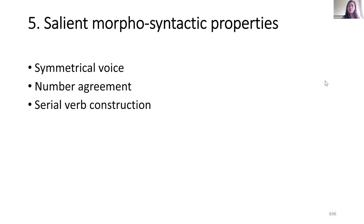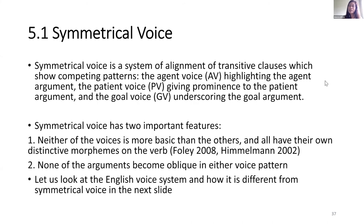Having discussed the different open and closed word classes, I'm now going to discuss the salient morphosyntactic properties of this language, starting with symmetrical voice, followed by number agreement, and then serial verb construction. What is symmetrical voice? Symmetrical voice is a system of alignment of transitive clauses which show competing patterns: the agent voice highlighting the agent argument, the patient voice giving prominence to the patient argument, and the goal voice underscoring the goal argument. Symmetrical voice has two important features: neither of the voices is more basic than the others, and none of the arguments become oblique in either voice pattern.